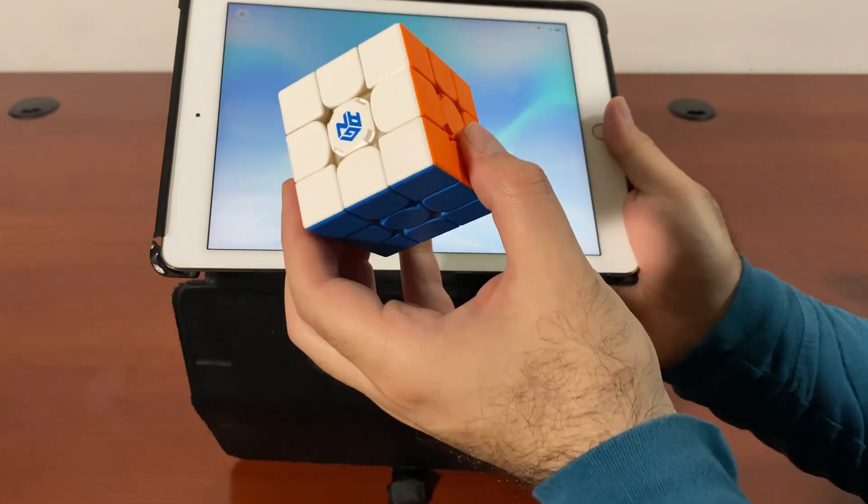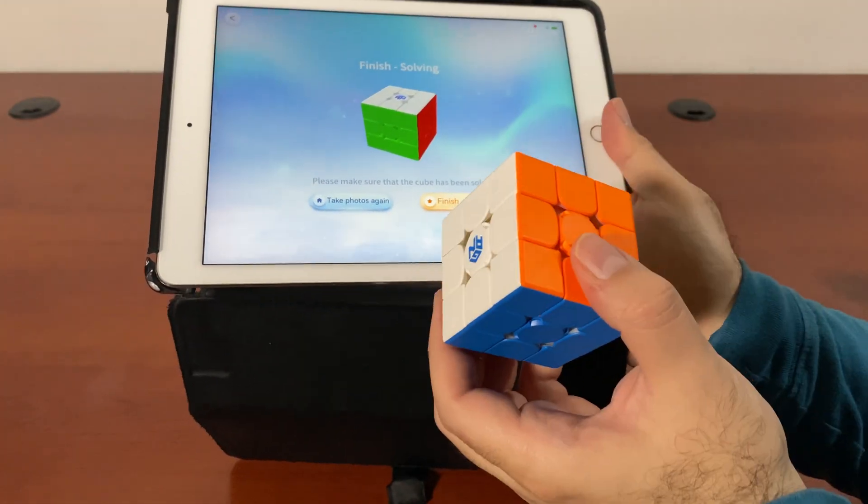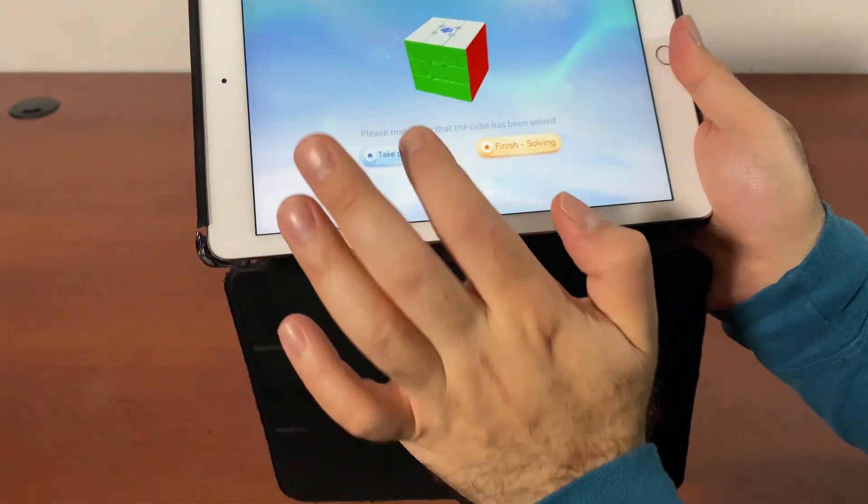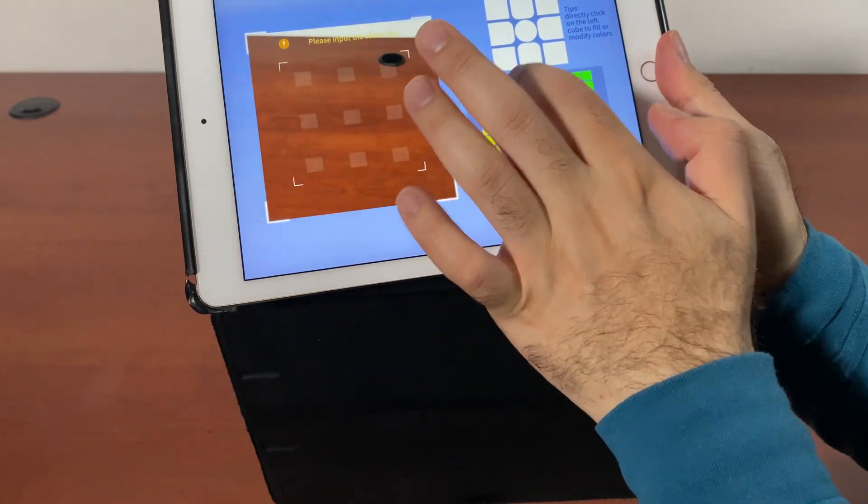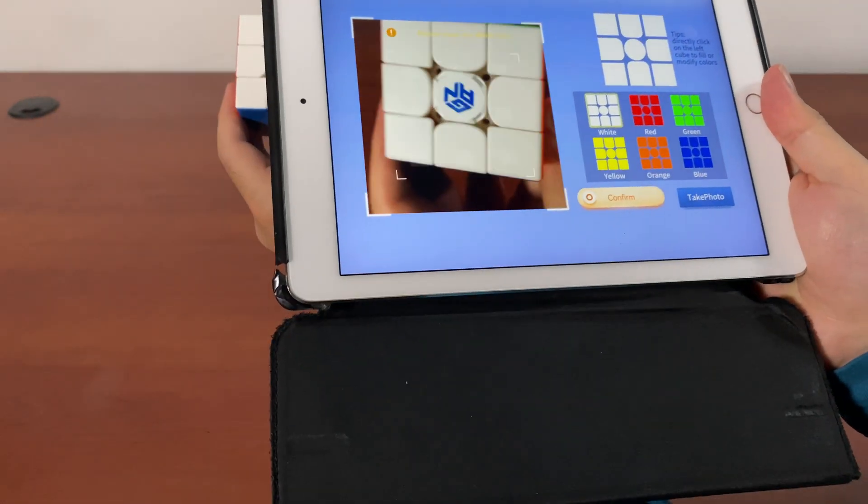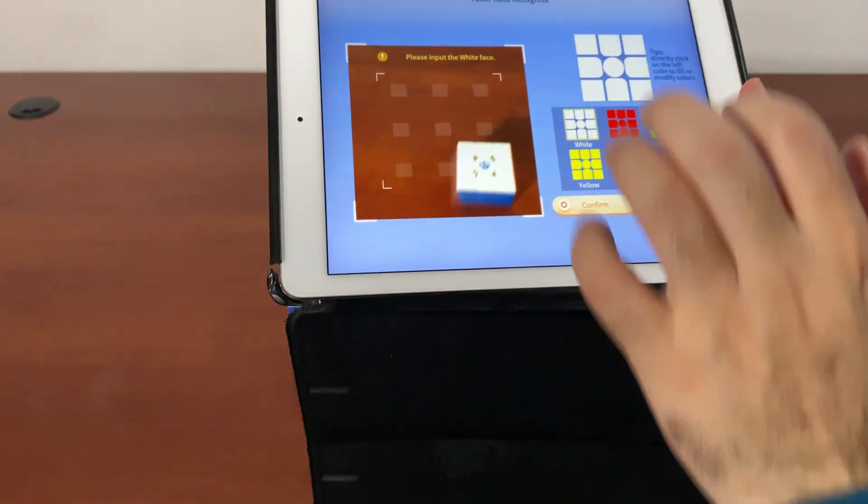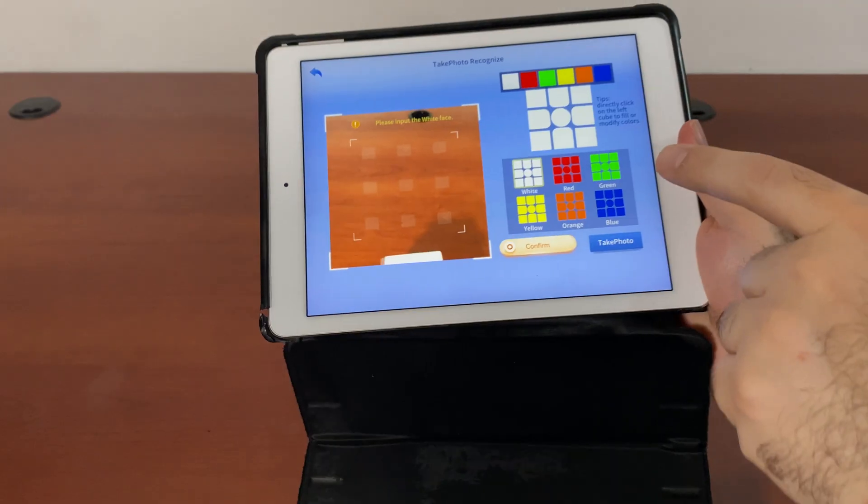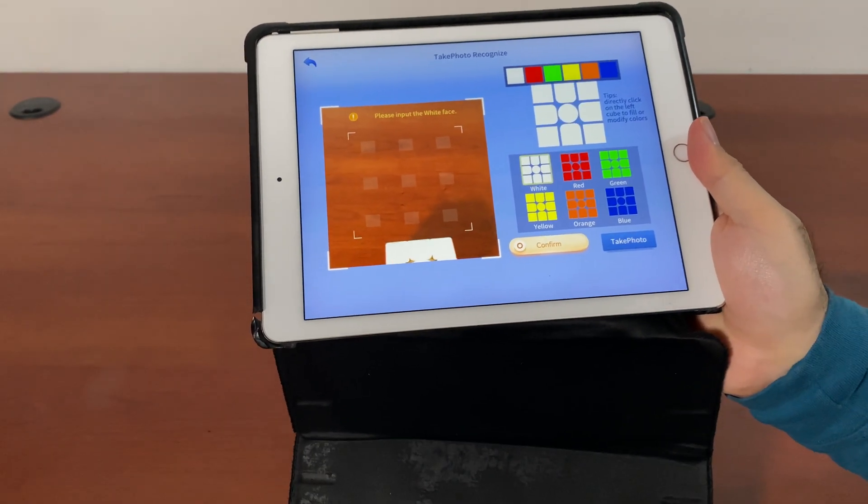The neat thing about this cube is that if you ever somehow manage to mess it up and it's not synced, you can just take a photo and then change the colors for different parts. Or just capture it by taking a photo like that, or you can just tap and change the color there.